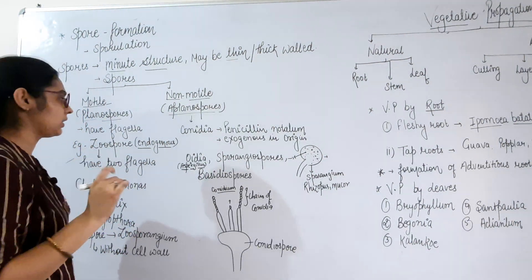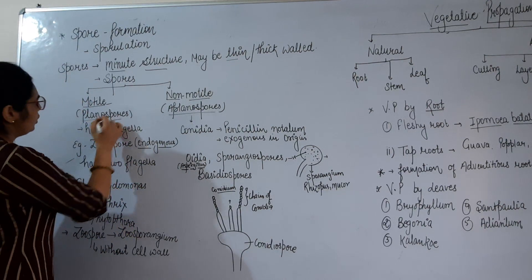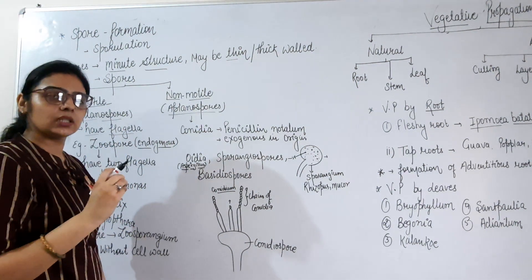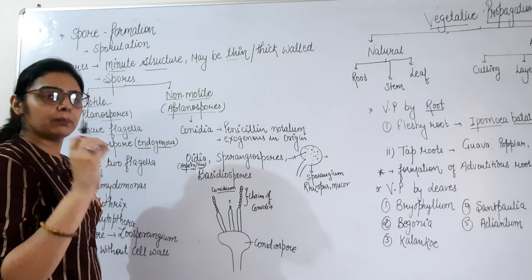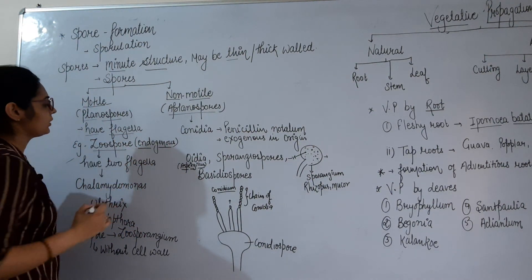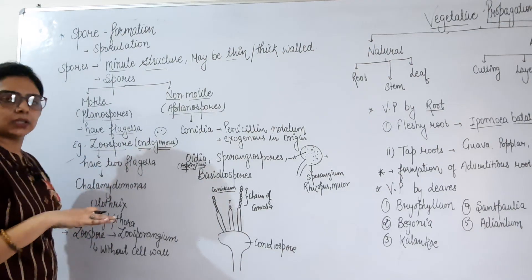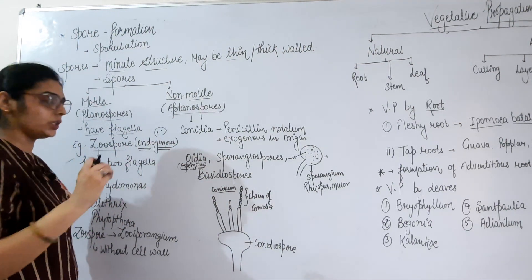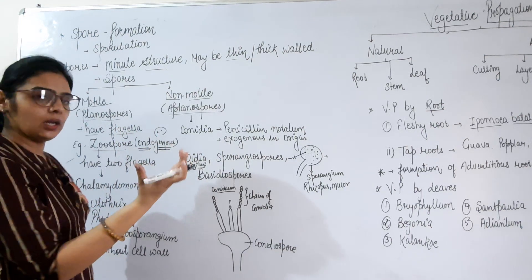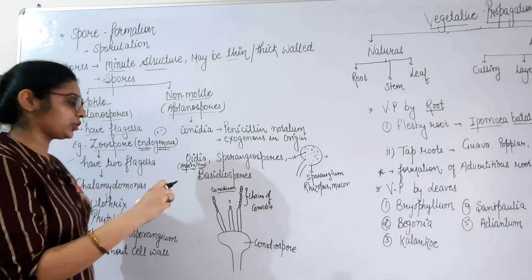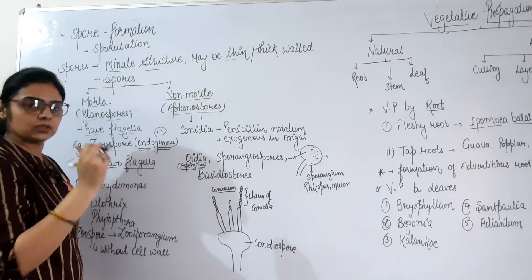For motile spores, we use the term planospores, and for non-motile spores we use the term aplanospores. Motile spores require specific structures for movement — they have flagella. Flagella help in movement. An example of a motile spore is the zoospore, and its origin is endogenous, meaning it forms internally within the parent body. There are two flagella in the zoospore for movement; flagella are hair-like structures that help in movement.